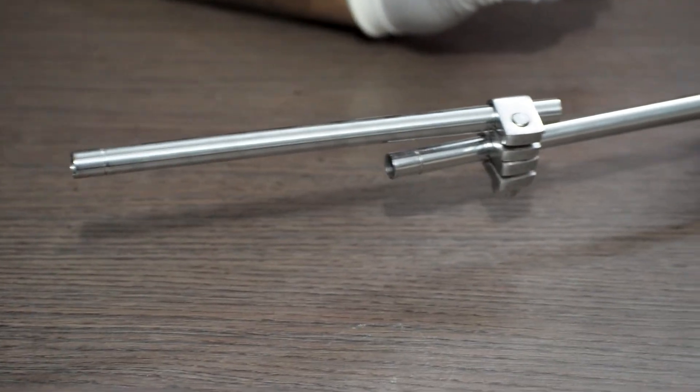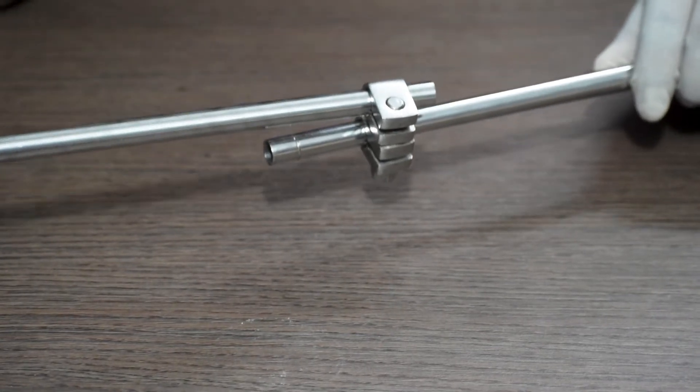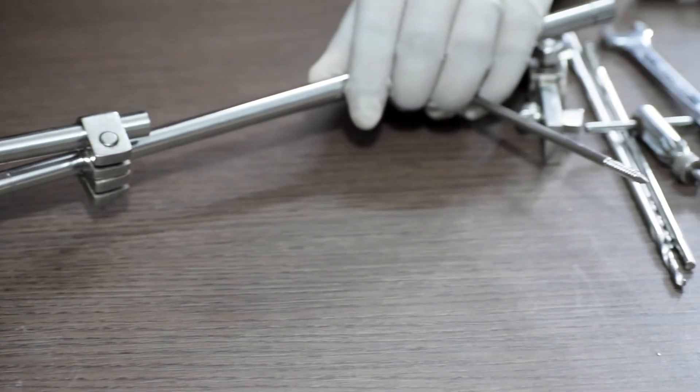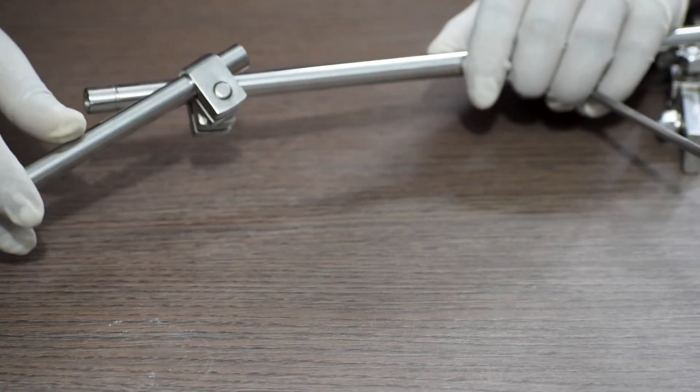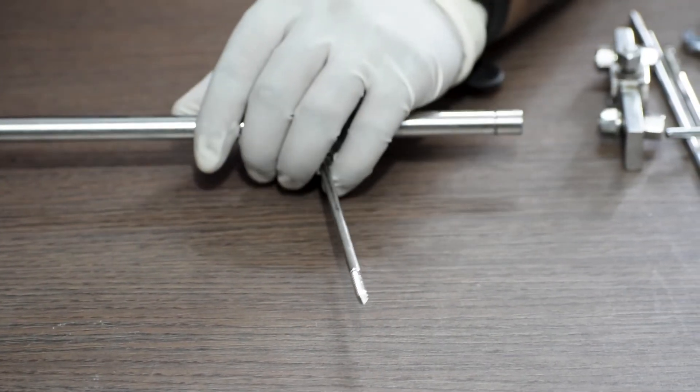Both these type of clamps are used if the fracture is near the condyle region or near the joint region of the bone.